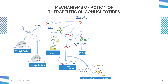Unmethylated CpG-containing oligonucleotides include a cytosine-guanine motif coupled with a phosphodiester or phosphorothioate backbone. Unmethylated CpG motifs are commonly found in bacterial DNA and activate the immune system through toll-like receptor 9.